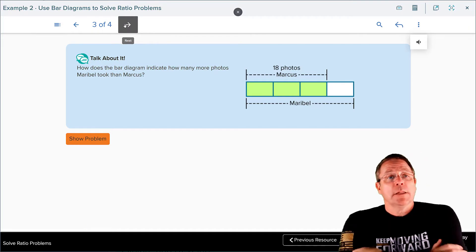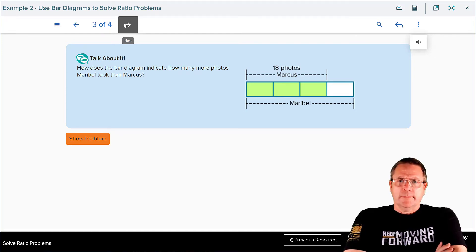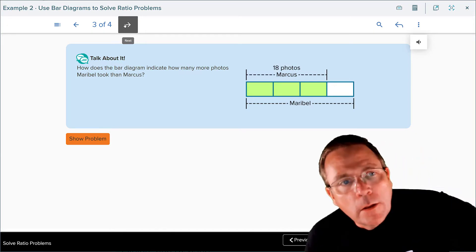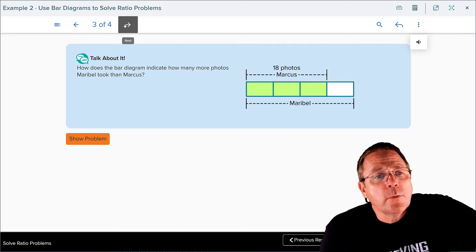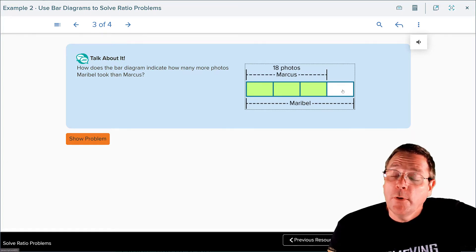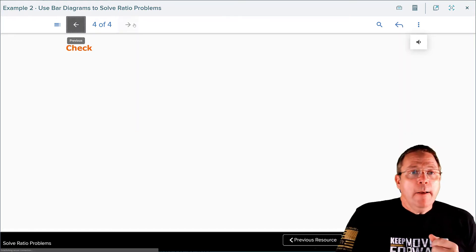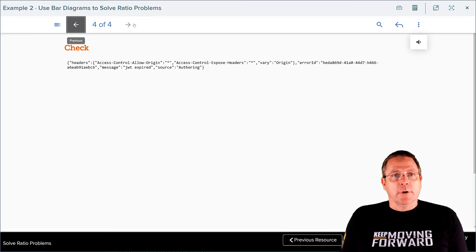Let's see what else they have for us. Next slide is our talk about it. How does a bar diagram indicate how many more photos Maribel took than Marcus? Pause the recording and write down a good answer to that. Did you write down your answer? Each one of these sections represented six photos. There's one section more that Maribel took than Marcus. That section's worth six. Therefore, Maribel took six more photos than Marcus did.